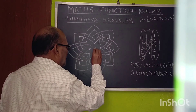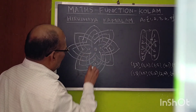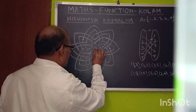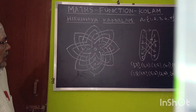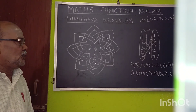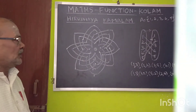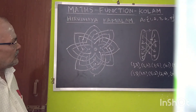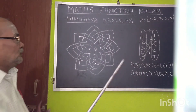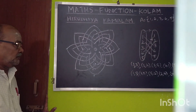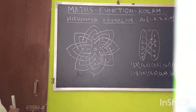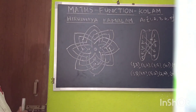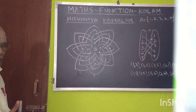Now keep a dot in the center and put a small round to make it more beautiful. This is the way to draw the Shirdi Kamala — it's a function, a 1 to 1 function. The set contains 5 elements, so 2 to the power 5 gives 32 functions, and 32 different kolams can be drawn using these 5 elements. Enjoy it and make other types of kolams using this function and mathematics. Thank you all.